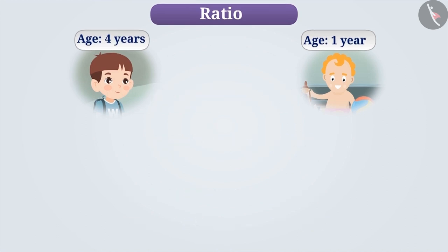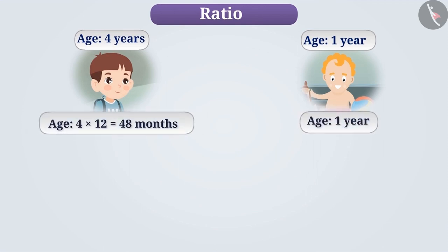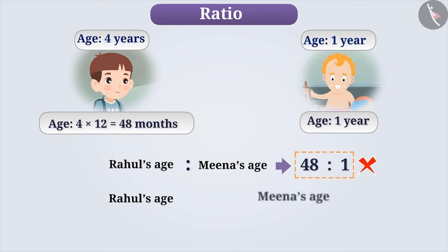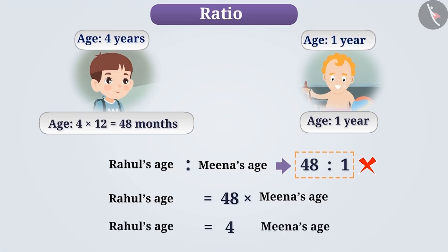Now consider this case. If we represent Rahul's age in months — that is, 4 into 12, which is equal to 48 — instead of 4 years, and Meena's age is represented as 1 year, then will it be correct to write the ratio of Rahul's age to Meena's age as 48 is to 1? This will result in an incorrect ratio because it shows that Rahul's age is 48 times that of Meena's age. But from the given ages, it is clear that Rahul's age is 4 times that of Meena's age. Thus, 48 is to 1 is not the correct ratio. In order to get the correct ratio, it is necessary to keep the units of the quantities the same.